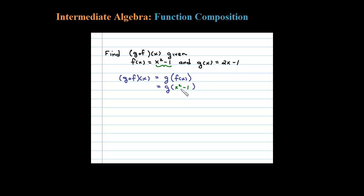Okay, so G is 2 times X minus 1. Substitute in there X squared minus 1 and then simplify. So notice what we just did: we took F of X and we plugged it into G. That's what the notation is telling me, G composed of F.